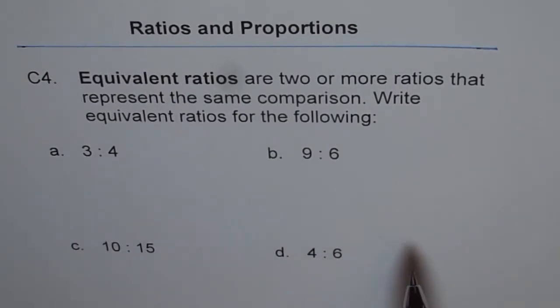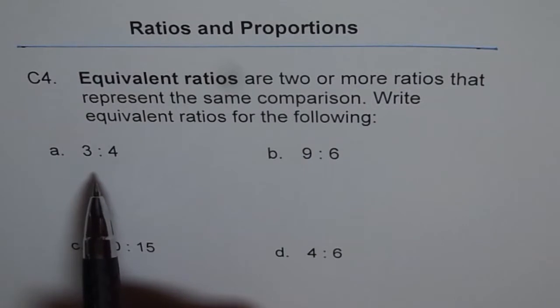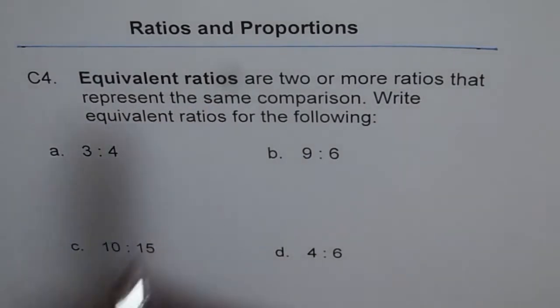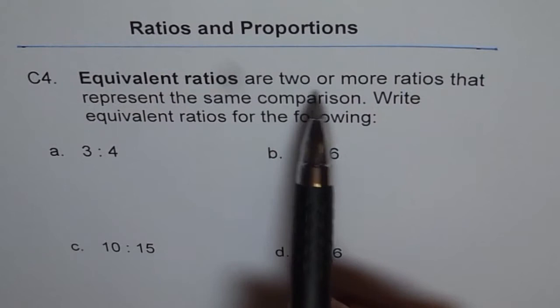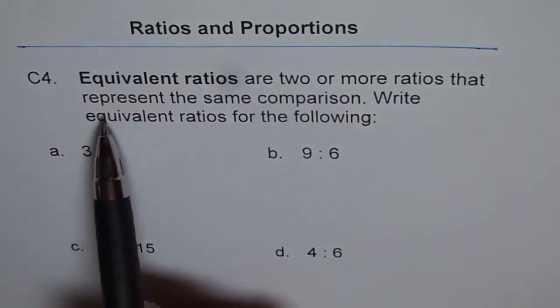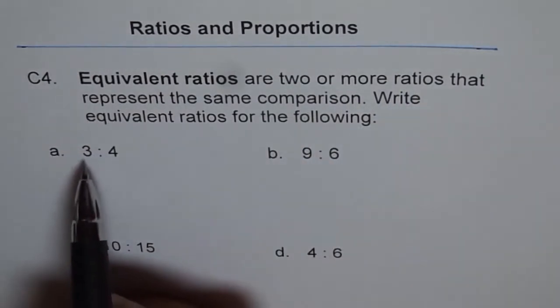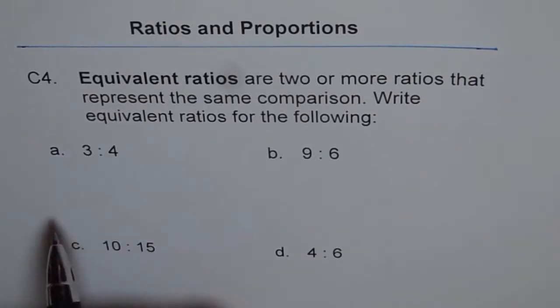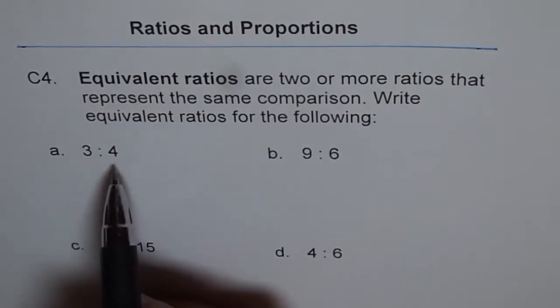So I will do two questions for you. What are we trying to do here to find equivalent ratios? We say equivalent ratios are two or more ratios that represent the same comparison. So what is the comparison here? 3 is to 4. Same comparison we can get like this.